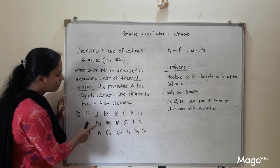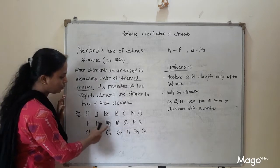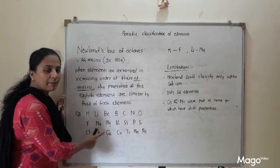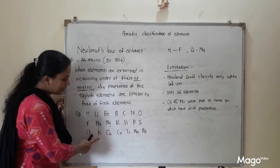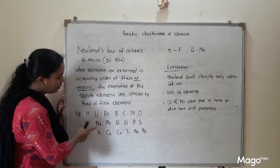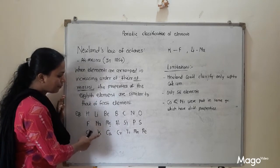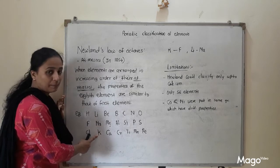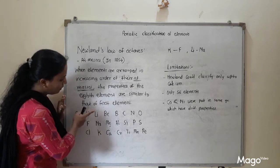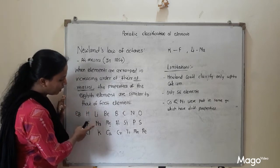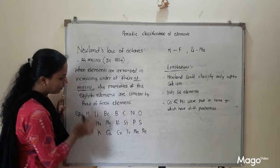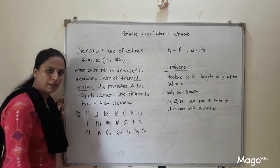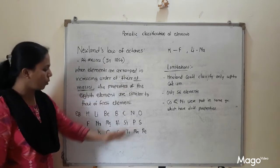If we start with sodium as the first element, counting 1 through 8, potassium is the 8th element. So properties of sodium and potassium are similar. We can see that properties of lithium, sodium, and potassium are all the same — they all have the same chemical properties. This is Newland's law of octaves.